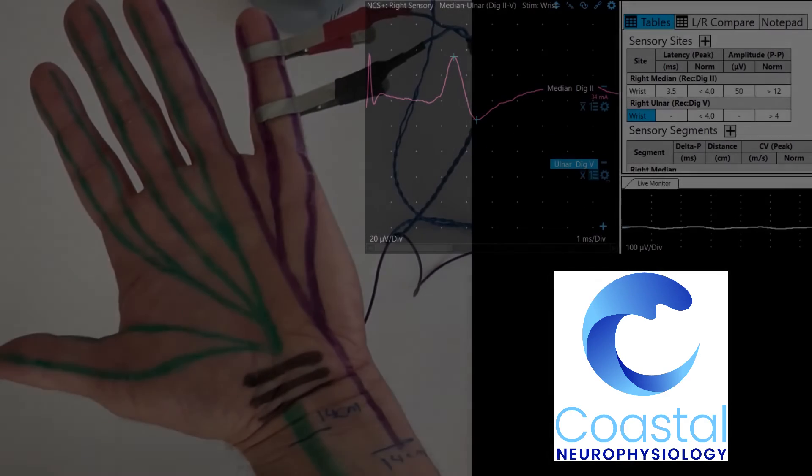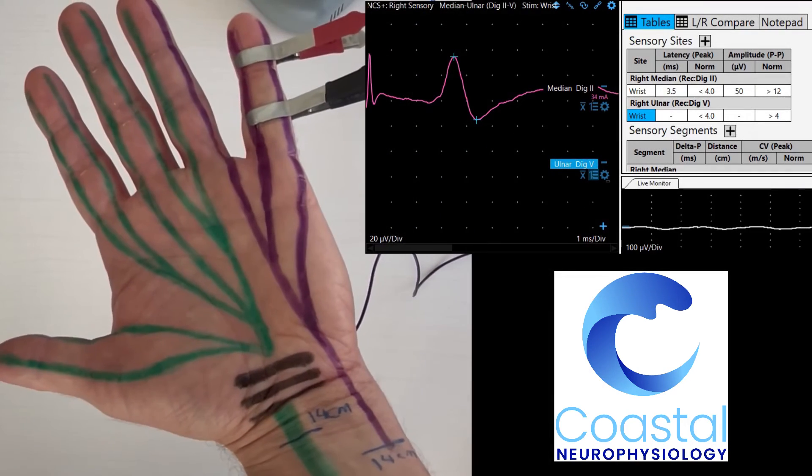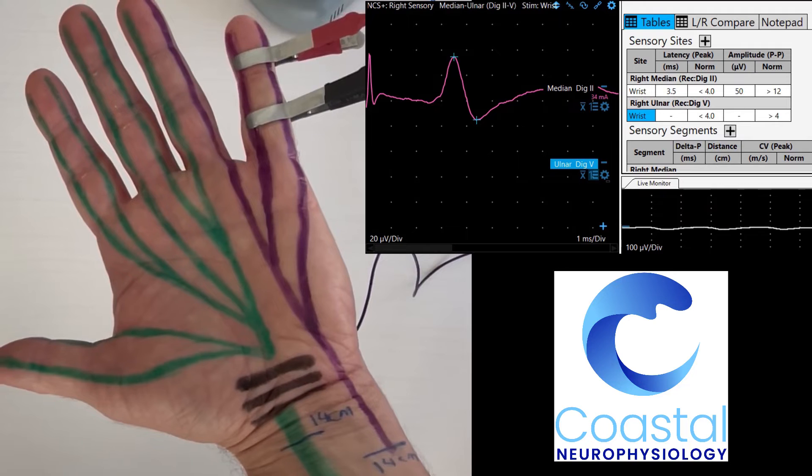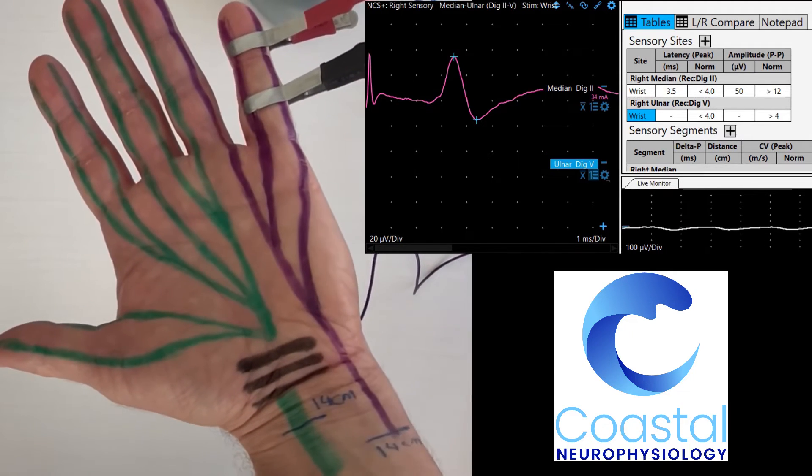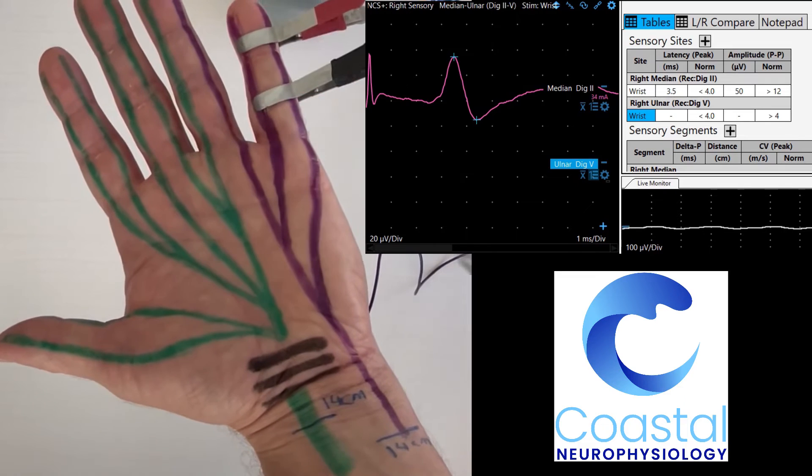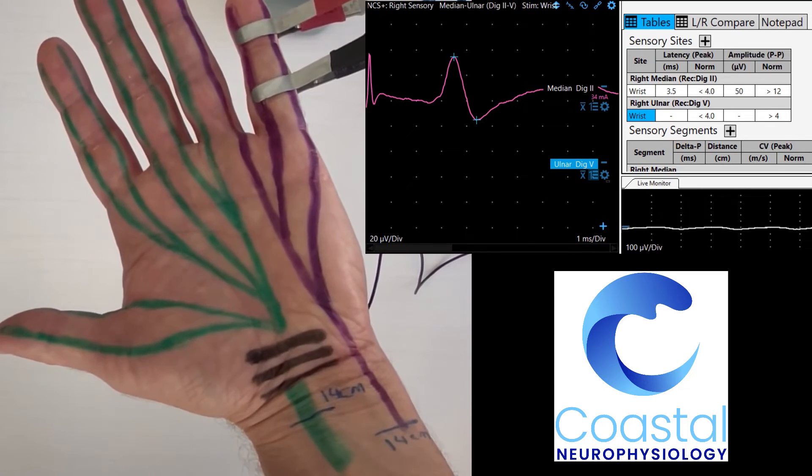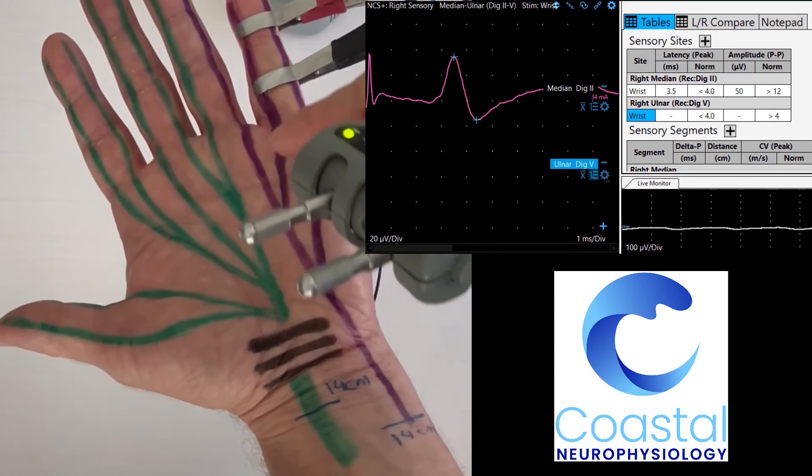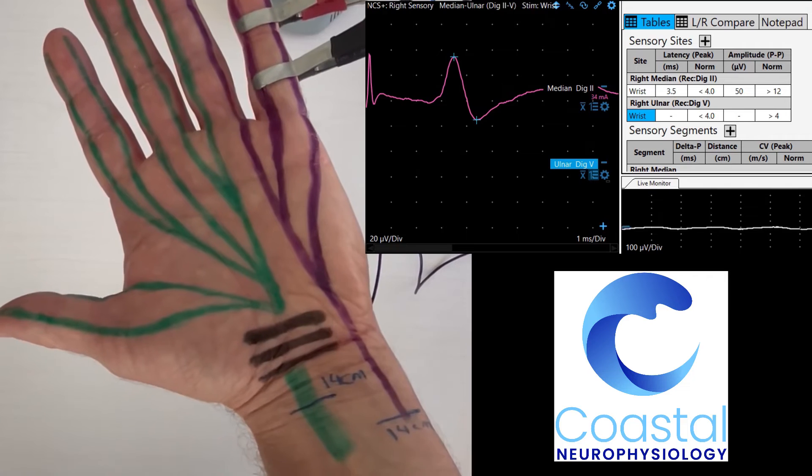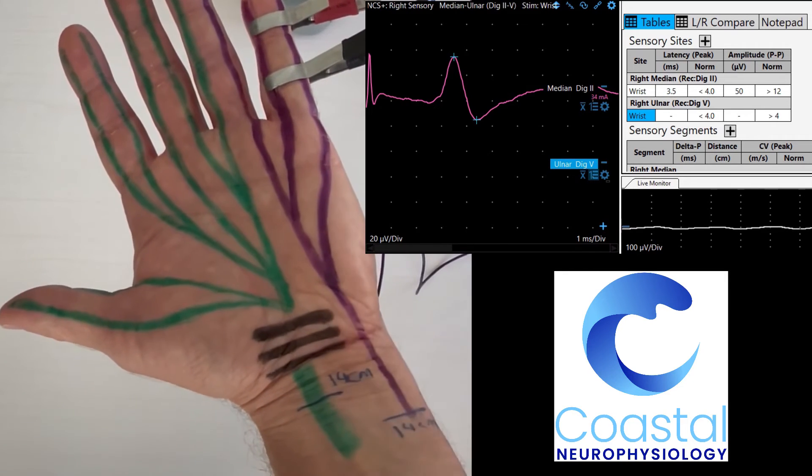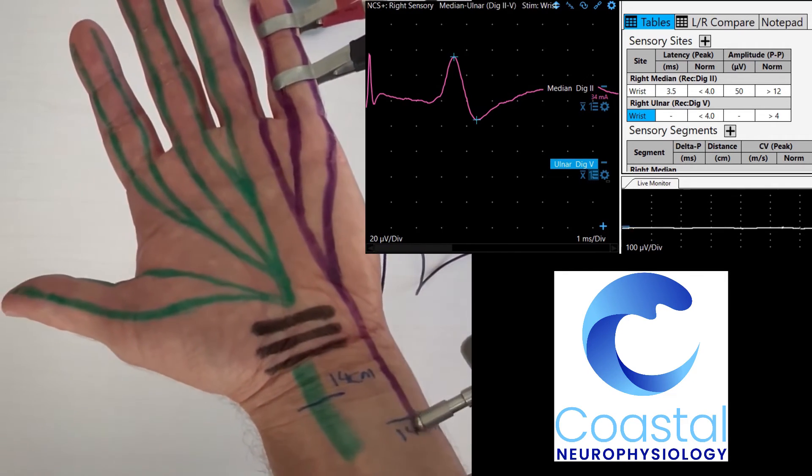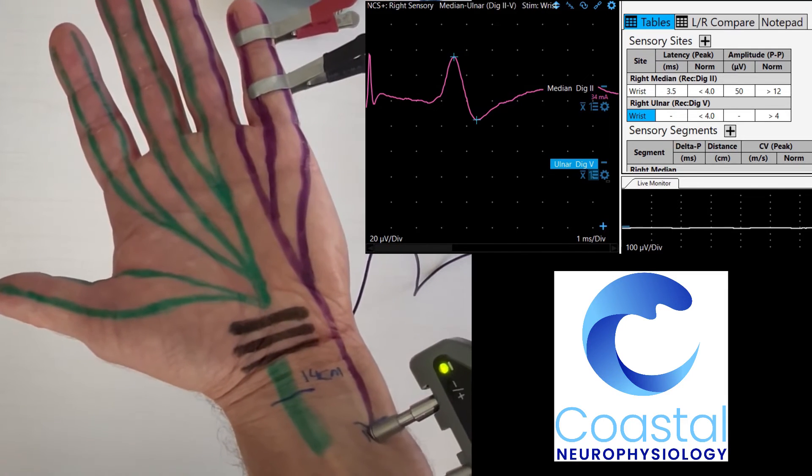An identical study can be performed but instead sampling from the ulnar sensory nerve instead of the median. If we stimulate the ulnar nerve at the wrist, sending the signal up the nerve fibers to the electrodes that are now placed on the fifth finger. The ulnar nerve bypasses the carpal tunnel, so if there was a problem affecting the median at the carpal tunnel it does not affect the ulnar nerve. This allows us to then compare the two nerve fibers to each other.